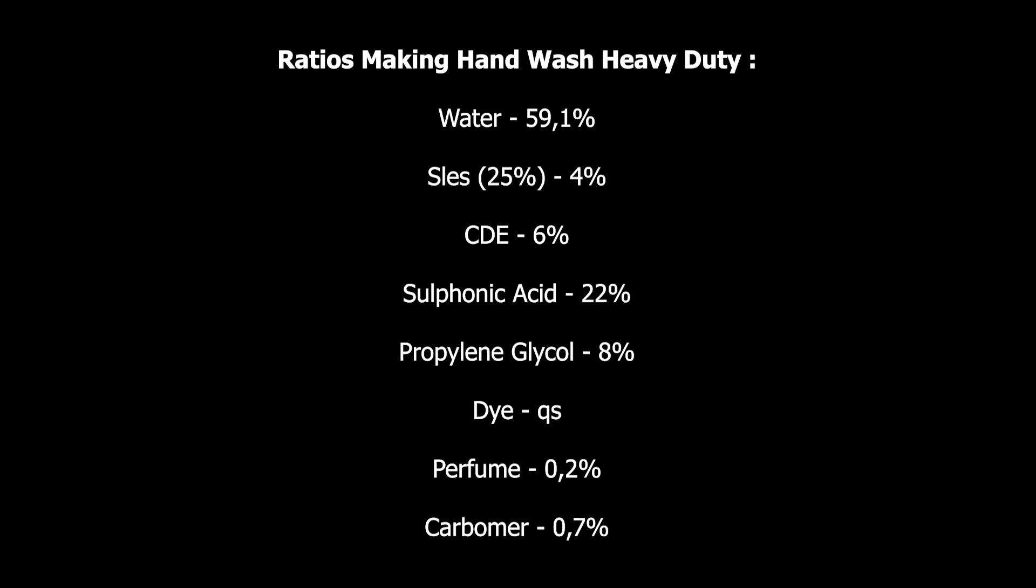Then carbomer, which is your thickening agent, 0.7% of the total volume. That's it.